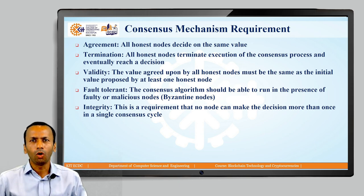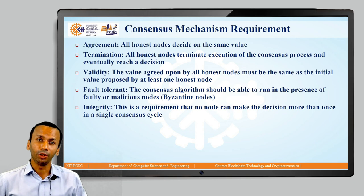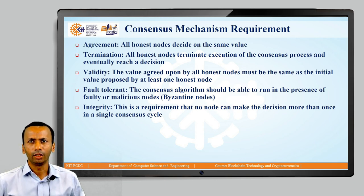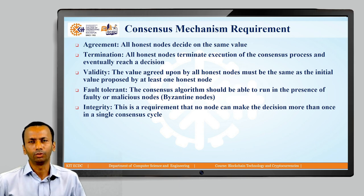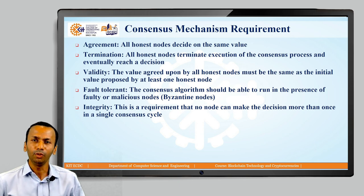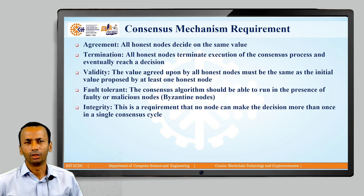The third requirement is Validity — the value agreed upon by all honest nodes must be the same as the initial value proposed by at least one honest node. Each node in the blockchain network proposes a value, and when consensus is reached, every distributed node must agree on at least one value which is decided by any one of the nodes in the network.